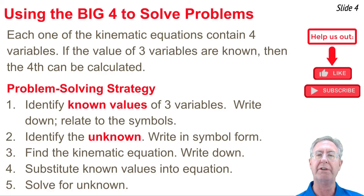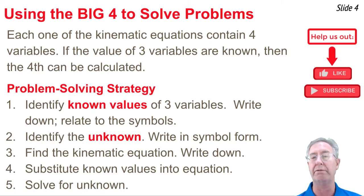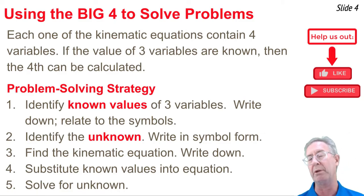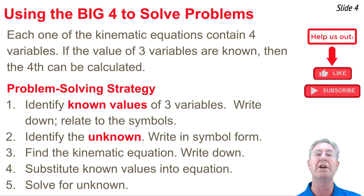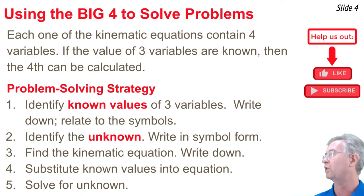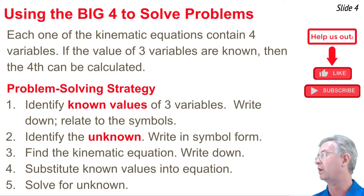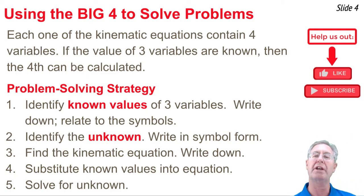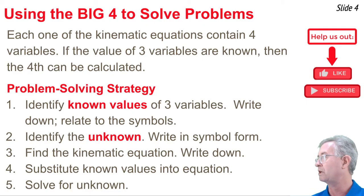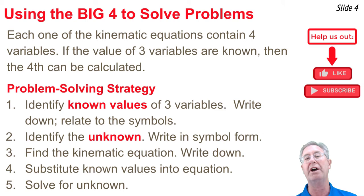When solving any physics problem, it's helpful to have an effective strategy. Our approach is based on the idea that each of the four kinematic equations contains four variables, and if three of those variables have known values, we can easily solve for the fourth. First, read the problem and identify three known variables. Second, identify the unknown. Third, find the equation containing all four variables. Fourth and fifth, substitute the known values and solve algebraically.